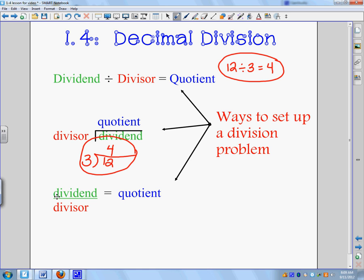Or thirdly, you have the dividend divided by the divisor, which is like a fraction. 12 over 3 equals 4.